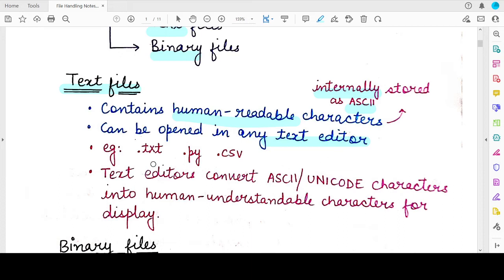And the examples of text files include any file ending or having a .txt extension or any Python file because the code that you write, you can understand what you are writing, what keywords you are using, what commands you are giving. Then there is Excel files or CSV files, Word files, anything that you can understand and you can open in any text editor suitable to that particular content.